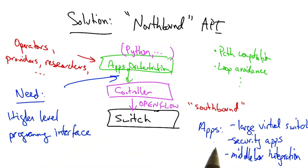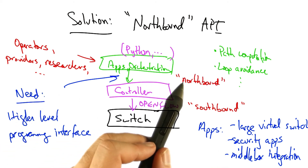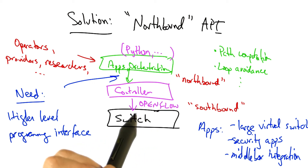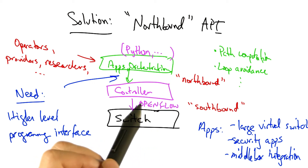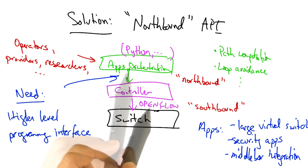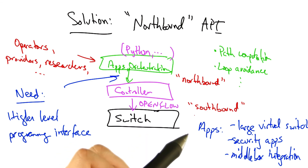Examples of such applications include the implementation of a large virtual switch abstraction, security applications, and services that need to integrate traffic processing with middleboxes. This programmatic interface is called the northbound API, and currently there is no standard for it, as there is for the southbound API in OpenFlow. We'll look at various APIs and programming languages that each compile to OpenFlow rules installed on switches across the network.